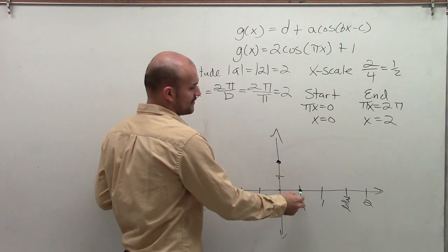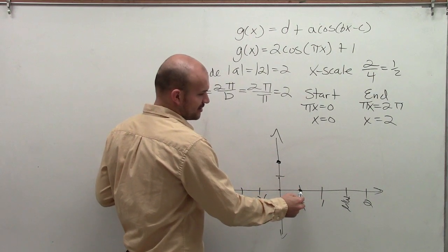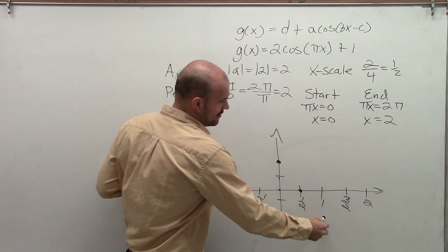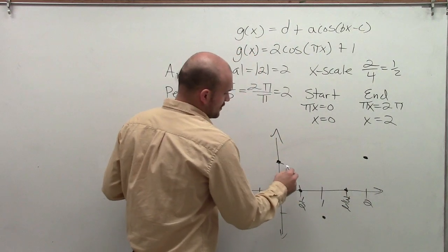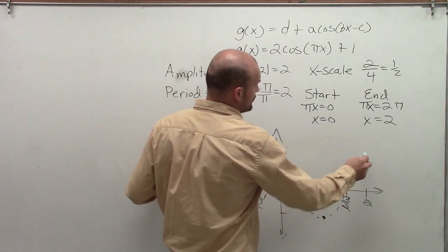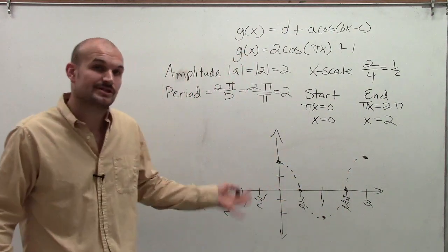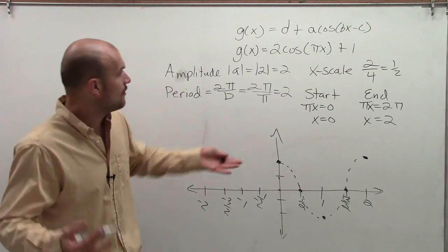The next critical point is going to go down to 0. Then I go to my minimum, back up to my intercept, and then back up to my max. So this graph with no vertical translation, the first initial period is going to look like this. However,